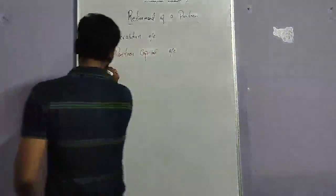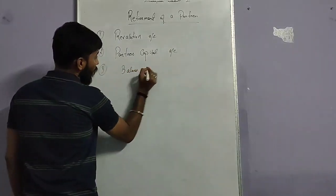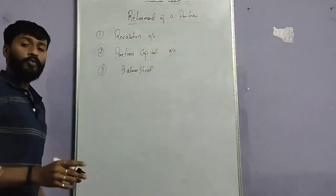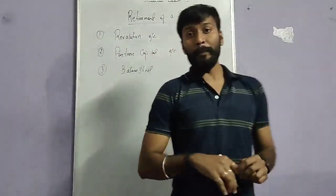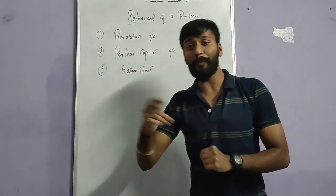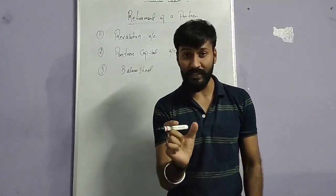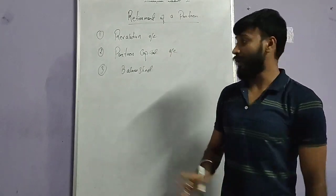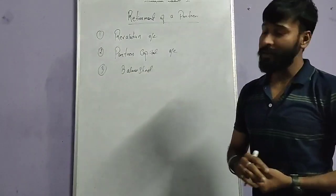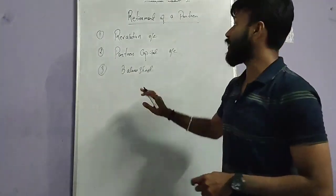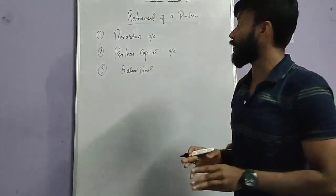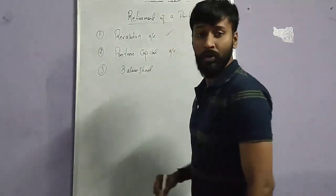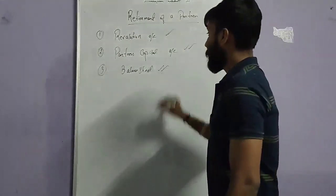The third account we need to open is the balance sheet of the new firm. Balance sheet of a new firm means after the partner retires, we have to prepare a new balance sheet. That balance sheet will be accounted as a new balance sheet in the retirement of a partner. So in this chapter, we mainly need to open three accounts: one is the revaluation account, one is the partner's capital account, and one is the balance sheet.